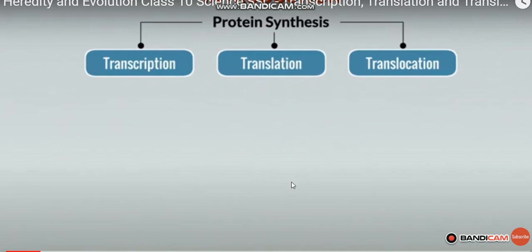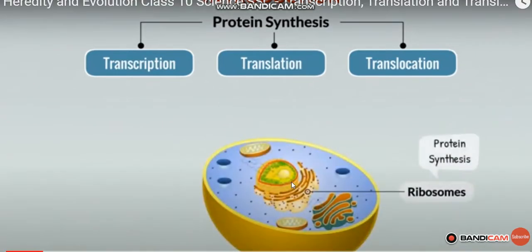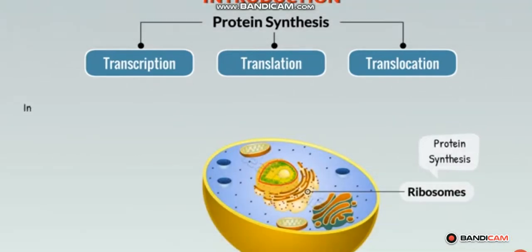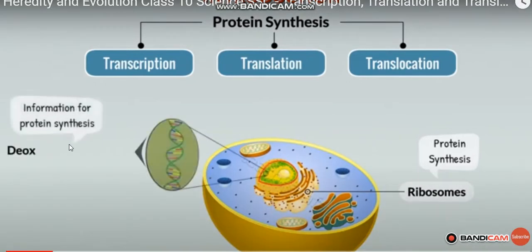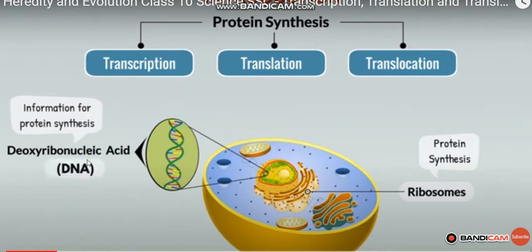Ideally speaking, proteins are synthesized in the cells of the body. This is an animal cell. This is a ribosome — this is where protein synthesis formation takes place. The information for protein synthesis is called Deoxyribonucleic acid, or DNA.